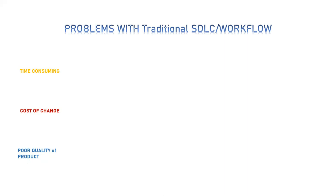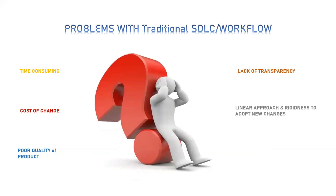Another drawback was lack of transparency — since the code was developed, committed, built, and tested without involvement of the stakeholders, they weren't aware of what was going on or the status of their product. The last drawback was the linear approach and rigidness to adopt changes, which resulted in unhappy customers.